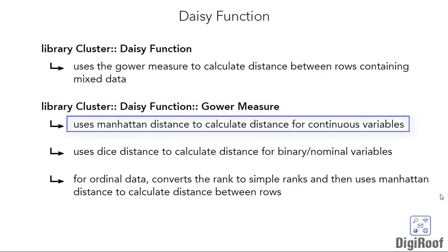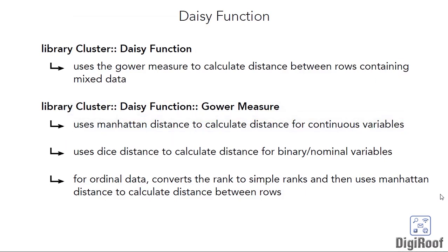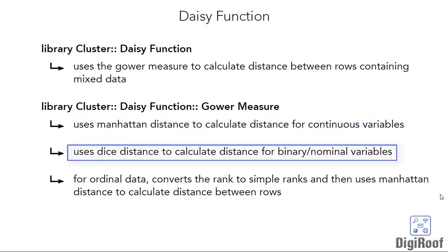For numeric data, the Gower measure uses the Manhattan distance. Similarly, for binary or nominal data, the Gower measure would use the Dice coefficient in order to calculate the distance between rows. Also, since nominal data cannot be directly used for clustering, the Gower metric would first convert it to binary data.